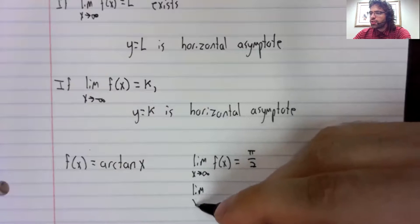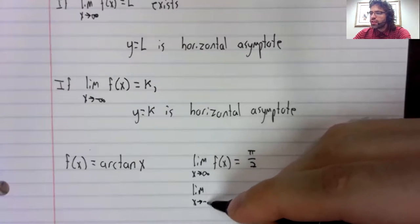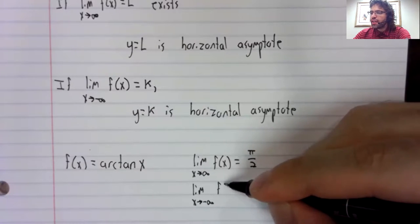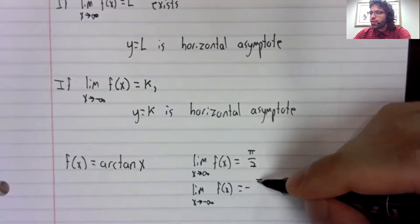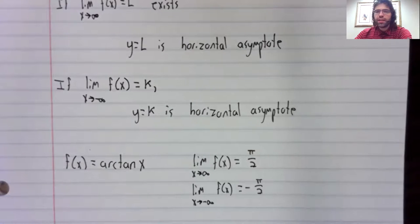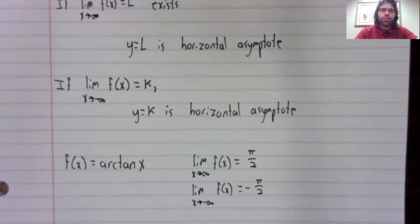And the limit as X approached negative infinity was negative pi over two.